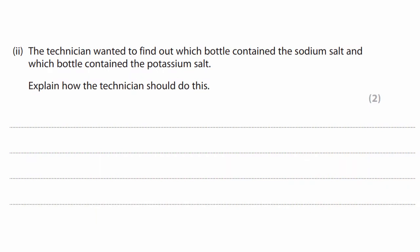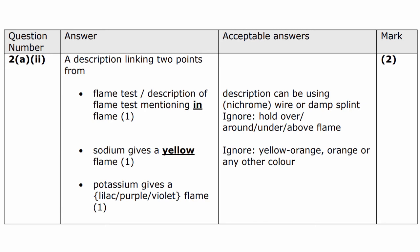In this past paper question, it says the technician wanted to find out which bottle contained the sodium salt and which bottle contained the potassium salt. Explain how the technician can do this. And what the examiner is looking for is the fact that you would use a flame test. And that sodium would give a yellow flame. And potassium gives a lilac flame.